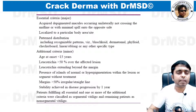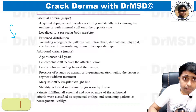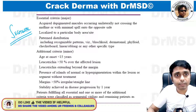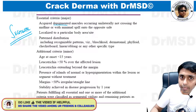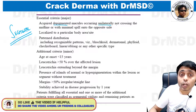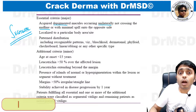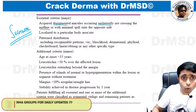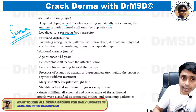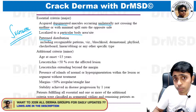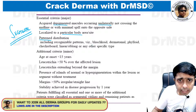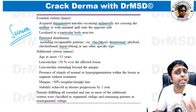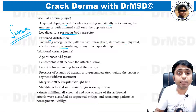Now, why is it not segmental vitiligo? The criteria for segmental vitiligo are: acquired depigmented macules occurring unilaterally, not crossing the midline (or with only minimal spill), localized to a particular body site or area, and following a blaschkoid, dermatomal, or linear pattern. These are all major criteria.